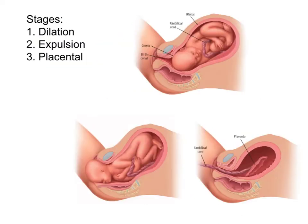There are three stages to birth: dilation, expulsion, and the placental stage. Before giving birth, a hormone called oxytocin is released, and this stimulates the walls of the uterus to contract, or to have contractions. This is the beginning of what is called labor.